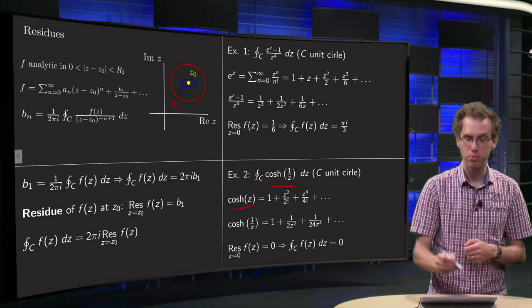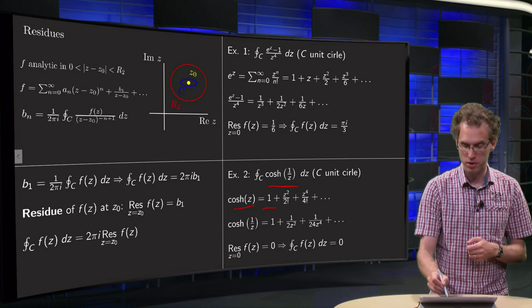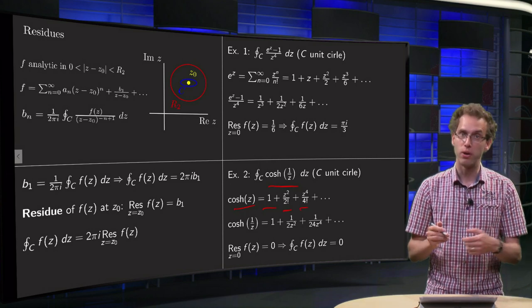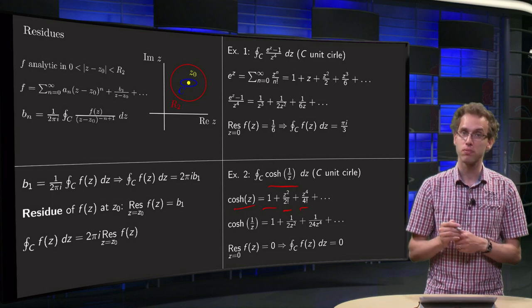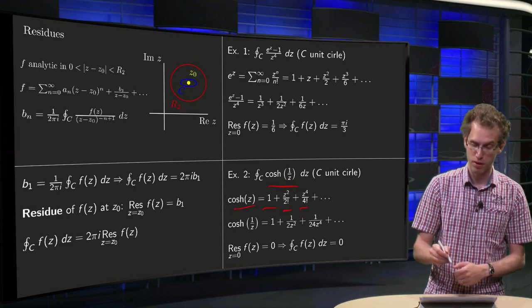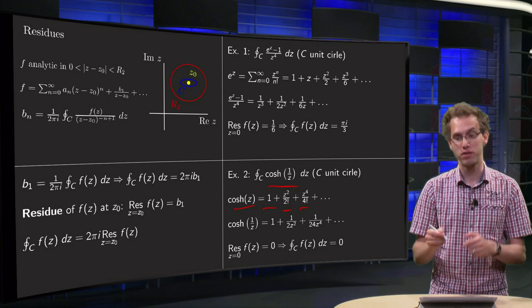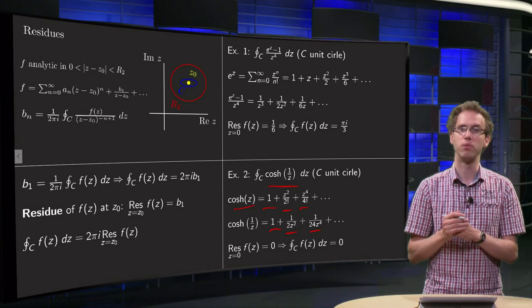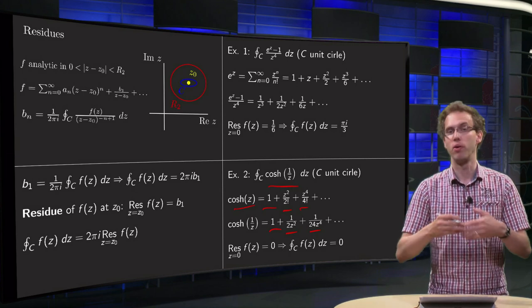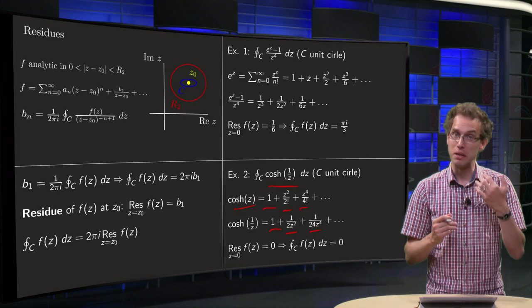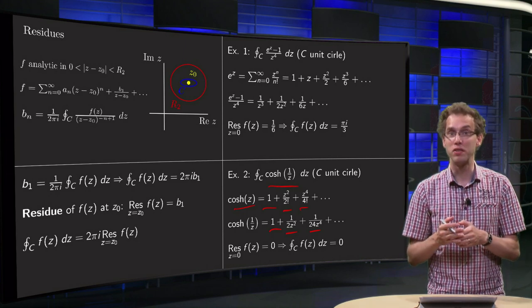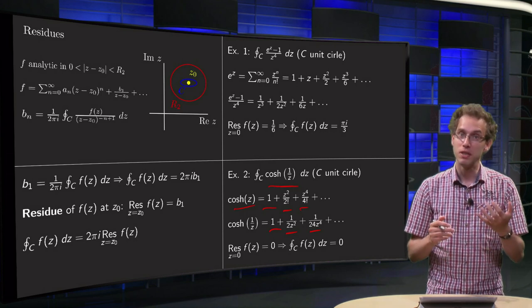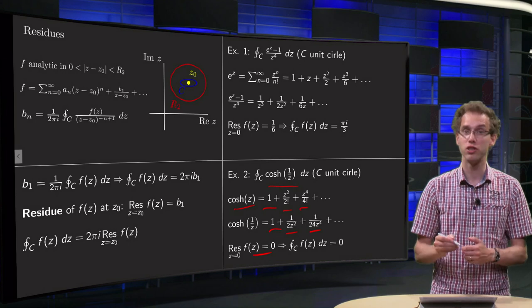We know the power series expansion of cosh: 1 + z²/2 + z⁴/4!, so we know the power series expansion of cosh(1/z), just plug in 1/z in place of z: 1 + 1/(2z²) + 1/(z⁴·4!). And you see, well, we have all kinds of negative powers, but that doesn't matter. We don't have any terms with 1/z, so the b₁ term in this case is 0, so that means that our residue at z equals 0 of cosh(1/z) is just 0.